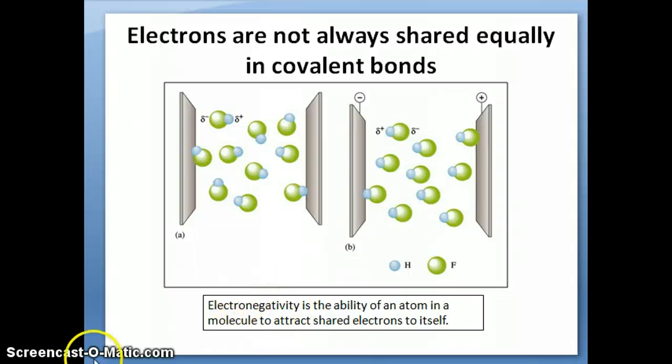So the property that we use to quantify how much attraction an atom can put on an electron, how much that electron is attracted to that atom in a covalent bond, is referred to as electronegativity. So again, the definition is it's the ability of an atom in a molecule that's involved in a covalent bond to attract shared electrons to itself.